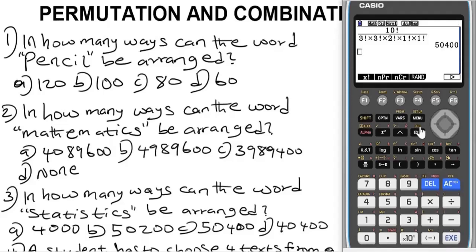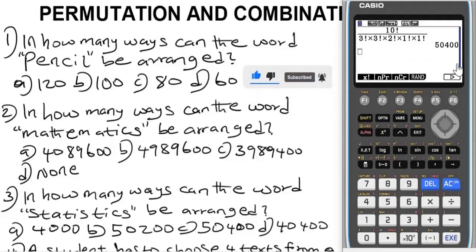The result is 50,400 ways. That means the word statistics can be arranged in 50,400 ways, which is option C. It's that simple.